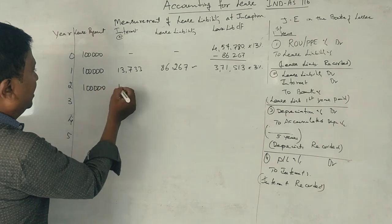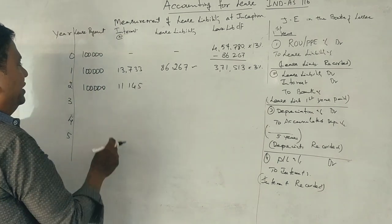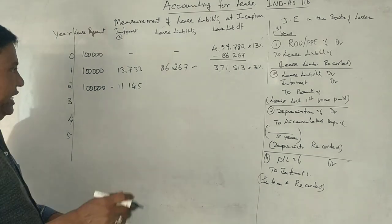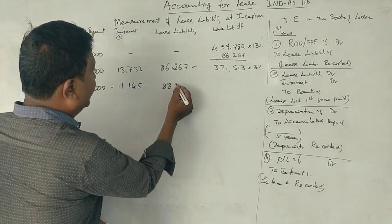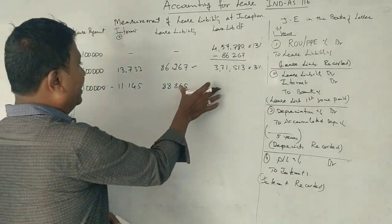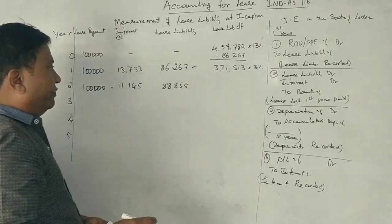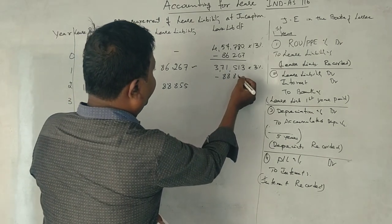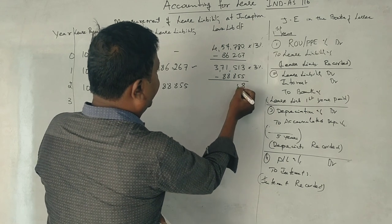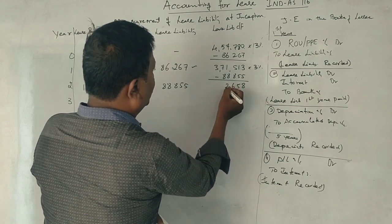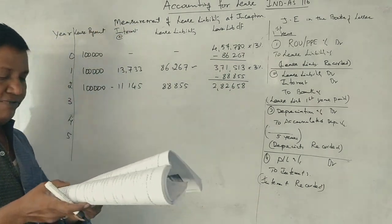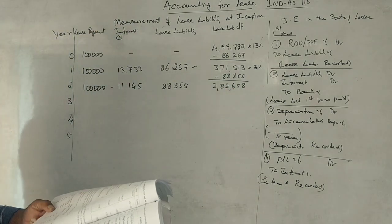Second year: 3,71,513 interest at 3% equals 11,145 Rs. Liability minus 1,00,000 equals 88,855 Rs. Total lease liability minus this equals 2,82,658 Rs.